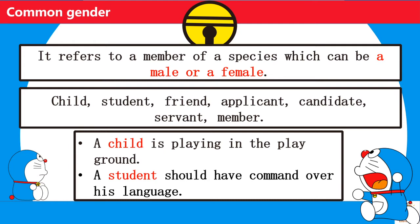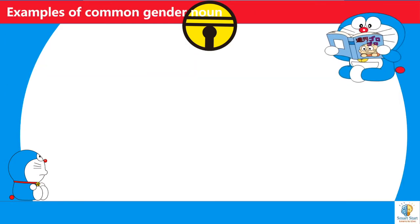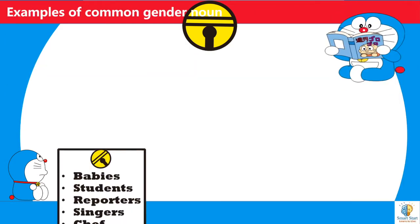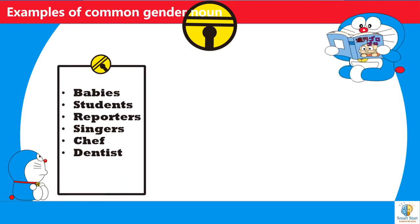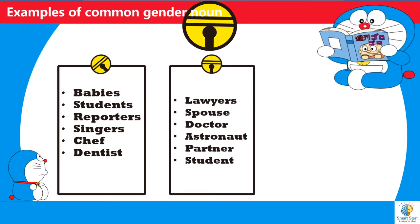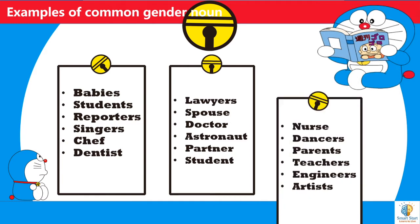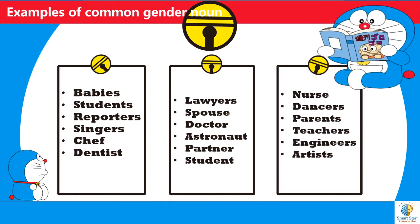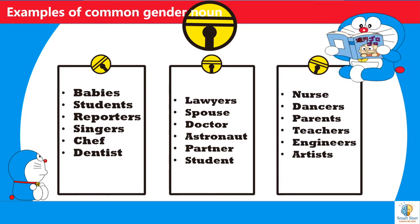A student should have command over his language. Here, student is common gender. Examples of common gender are babies, students, reporters, singers, chef, dentist, lawyer, spouse, doctor, astronaut, partner, nurse, dancers, parent, teachers, engineers, and artist.